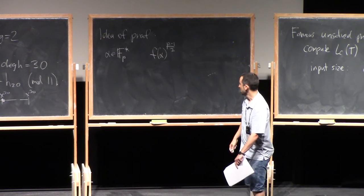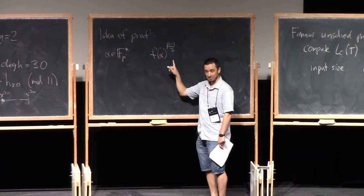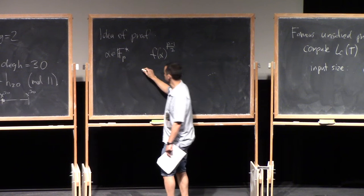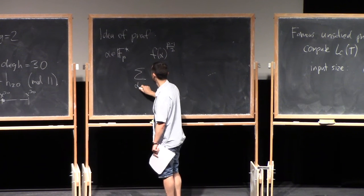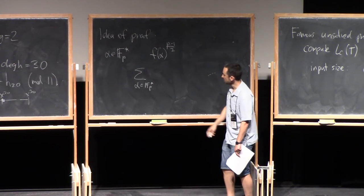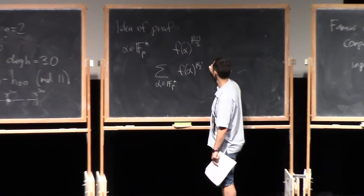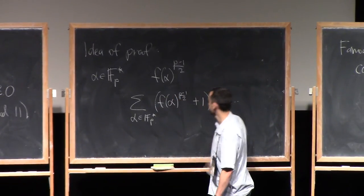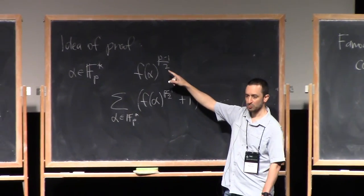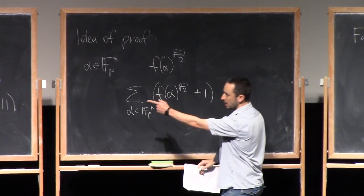Now, this expression is going to be either 0 or 1 or minus 1 modulo P, depending on whether F of alpha is a square or not. So, what you do is you take a sum of alpha over F_P star of F(alpha) to the P minus 1 over 2 plus 1, and you sort of evaluate this in two different ways. One way gives you the number of points that you're trying to count, and the other way, if you expand out this expression using H of X,